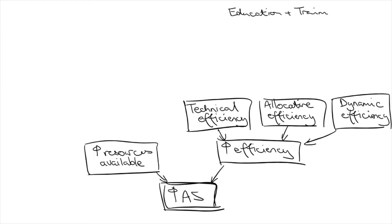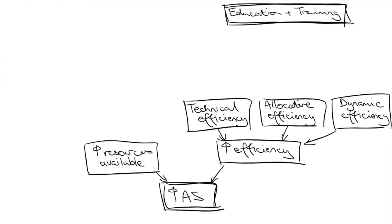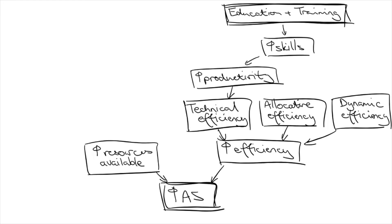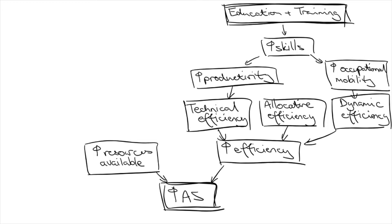To wrap up this video, I want to suggest that education and training is one of the best ways to increase aggregate supply. Not only does it increase technical efficiency, as labor becomes more skillful and therefore more productive, but skilled workers are also more occupationally mobile. This means that their skill sets can be more easily transferred, making them more responsive to structural change, which is dynamic efficiency.